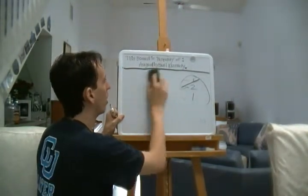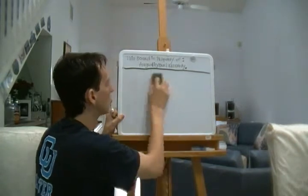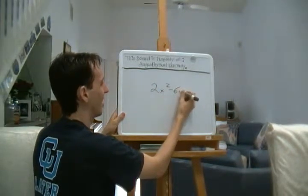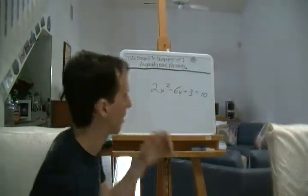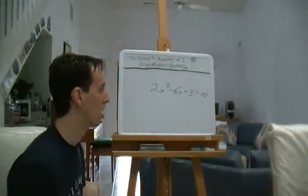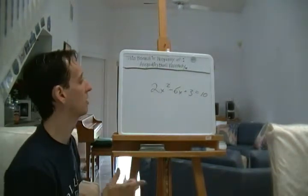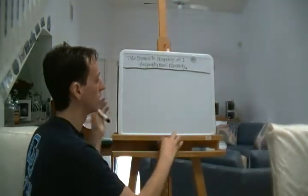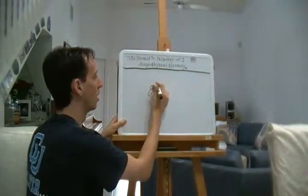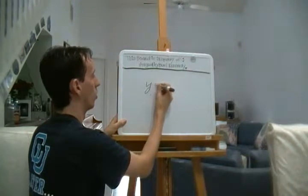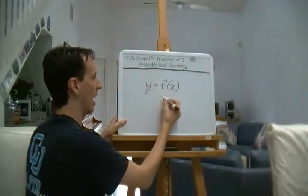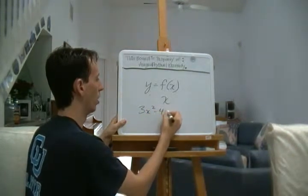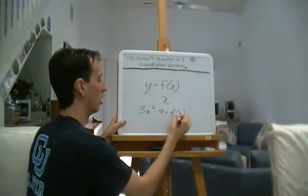You've dealt with functions before. You're probably familiar with seeing functions in algebraic form. One example would be 2x squared minus 6x plus 3 equals 10. That's an equation which we can use as a function, because what we do is we choose y, or f of x, and we relate that to x. So if you've got 3x squared minus 4 equals f of x, we have a function.